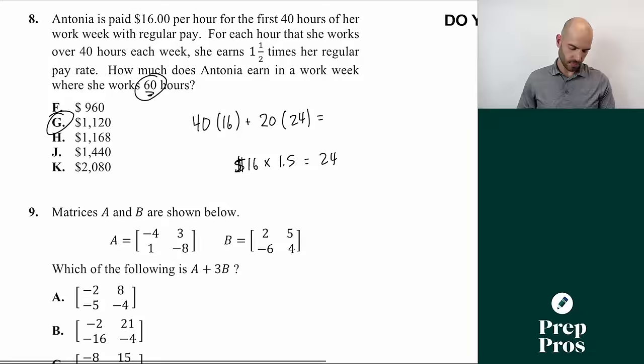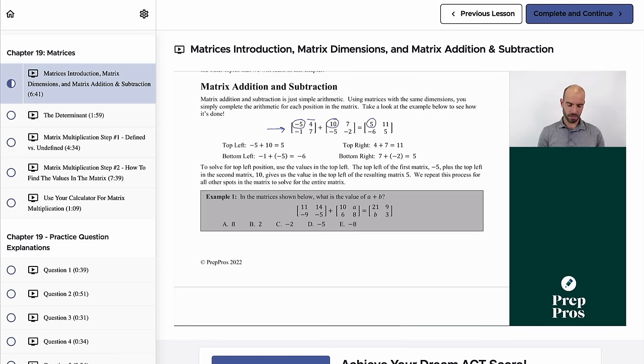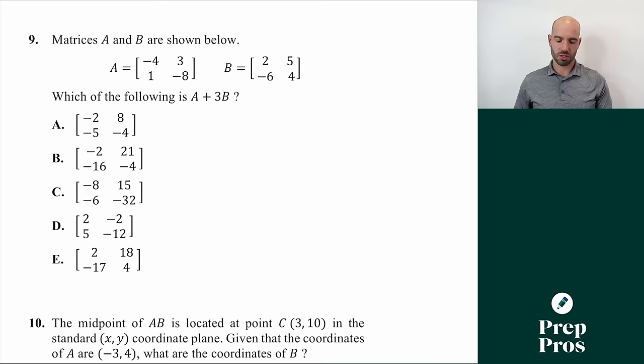Number nine is a matrices question — a topic many students haven't learned before. If you need to learn or relearn matrices, the free trial of the ultimate ACT course has complete video lessons on matrix multiplication, dimensions, addition, and subtraction, plus the full chapter from the math book with practice questions. Matrix addition and subtraction is actually quite easy — you just stay in the same spot and add the corresponding elements.